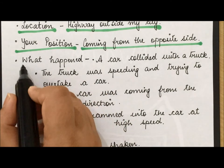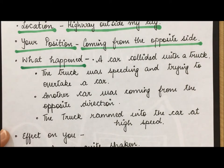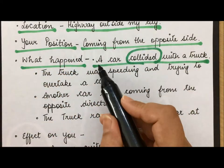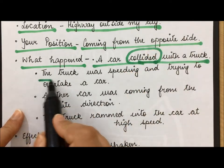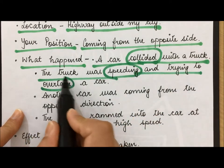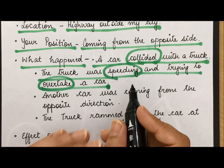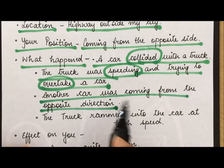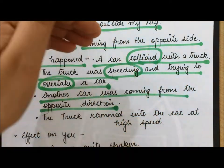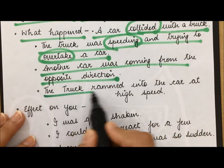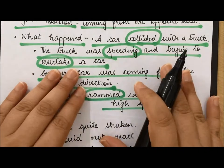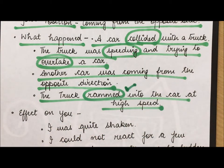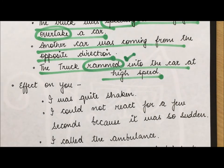The next question is what happened — how did the accident occur? You can say: a car collided with a truck. 'Collided' means it rammed into it. The truck was speeding and trying to overtake a car. Another car was coming from the opposite direction, so when the truck tried to overtake, it rammed into the oncoming car at high speed. That is how the accident occurred.